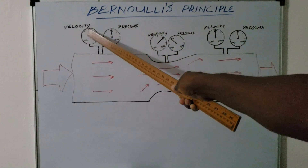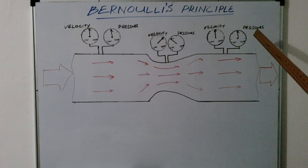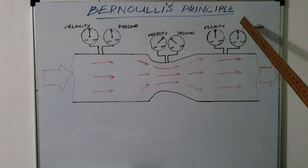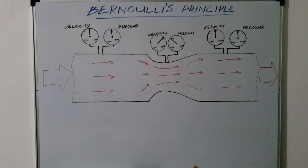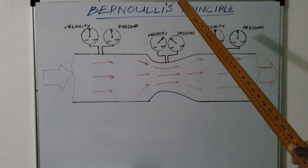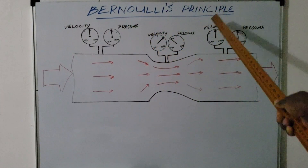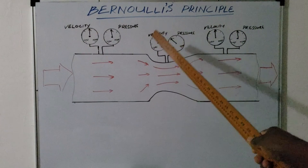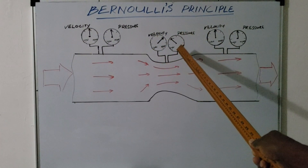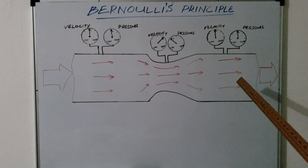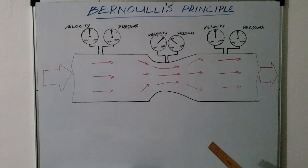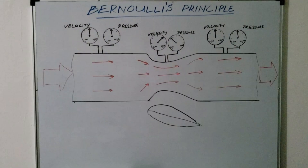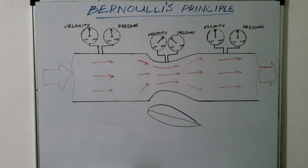Now you can see the indication of all pressure and velocity gauges. Only at the venturi area do the pressure gauge needles go down while the velocity gauge needle goes up — that means velocity increases and pressure decreases. Now you can see how the venturi effect works on a wing or aerofoil.